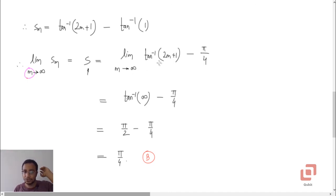Now if m tends to infinity, clearly 2m plus 1 tends to infinity, and tan inverse of infinity is pi by 2. So pi by 2 minus this one, so pi by 2 minus pi by 4 is pi by 4. And therefore the original infinite series converges to pi by 4.